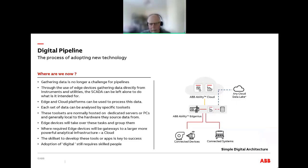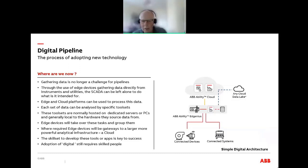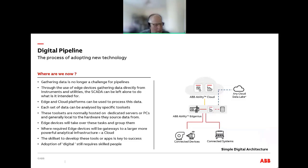The edge doesn't have to be a simple gateway — you can put analytics and digital applications in the edge, dependent on the scale of the site. The edge can perform critical tasks: asset monitoring, generating key performance indicators. Because the edge connects to the control network, cybersecurity is vitally important. Above the edge is the cloud — in ABB's world that's Genex — where the heavy-duty, high-powered analytics take place. For a pipeline, a cloud is a logical addition because it gathers data from multiple pump stations, tens or hundreds of block valves, compressor stations, and pressure reduction skids.